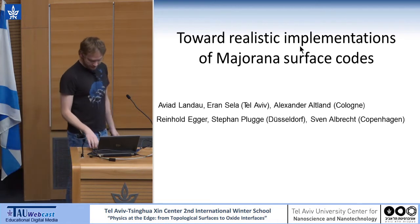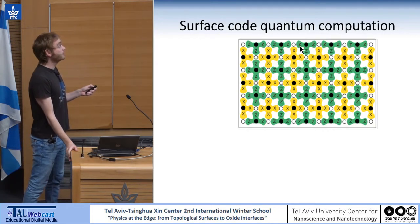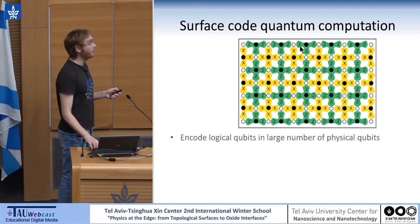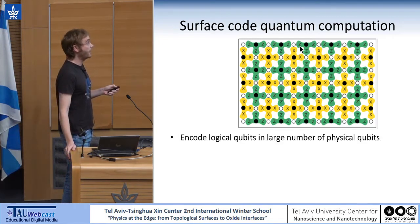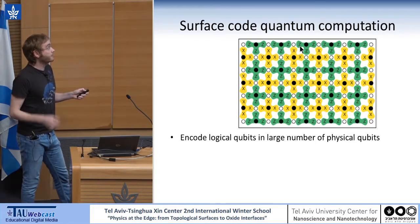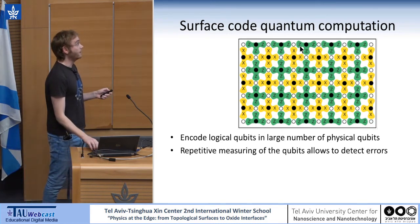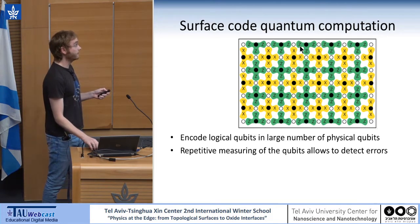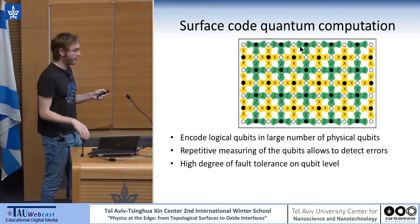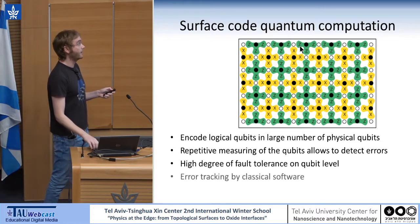So what is basically the surface code? Each one of these circles is a qubit. This entire array of qubits — many, many physical qubits here — encodes just one logical qubit. Every single one of these qubits has to be measured in a repetitive manner. In this way, we can detect errors in the entire system very efficiently, and these errors can be tracked and corrected outside of this platform via classical software.